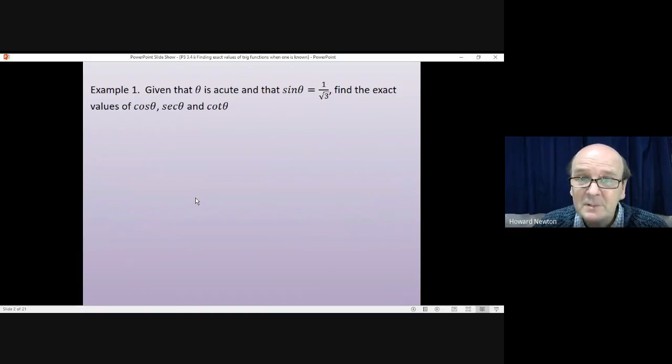And this lesson will also include a reminder of how you use a cast diagram. The first example is fairly straightforward, and I'll let you have a go at it in a moment yourself. You're told that theta is an acute angle, and you're told that sine theta is 1 over root 3. We're asked to find the exact values of cos, sec, and cot theta.